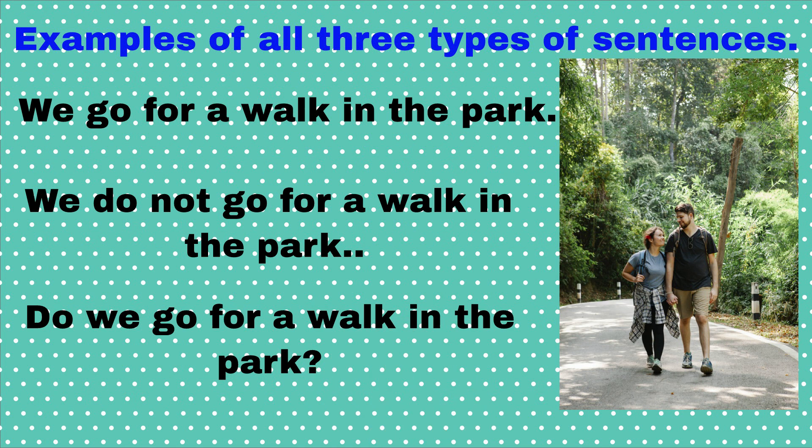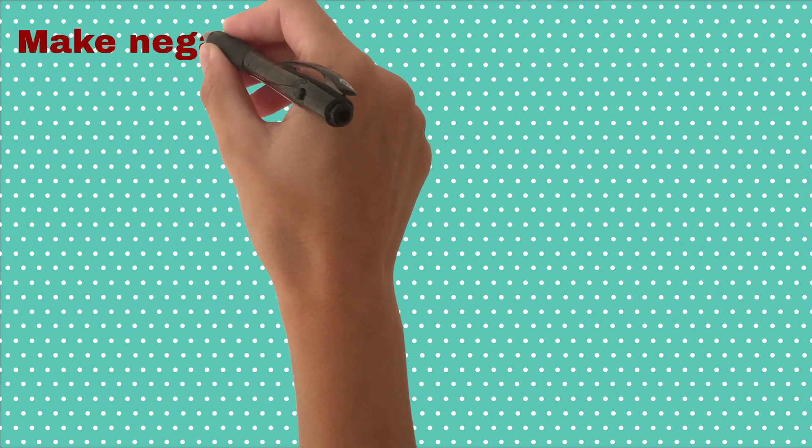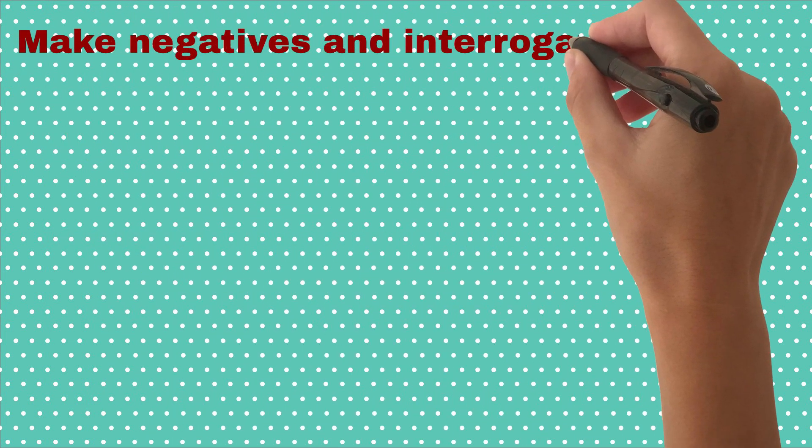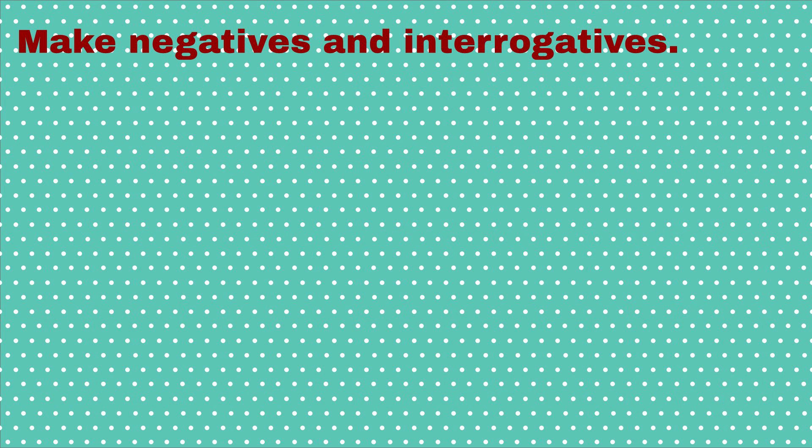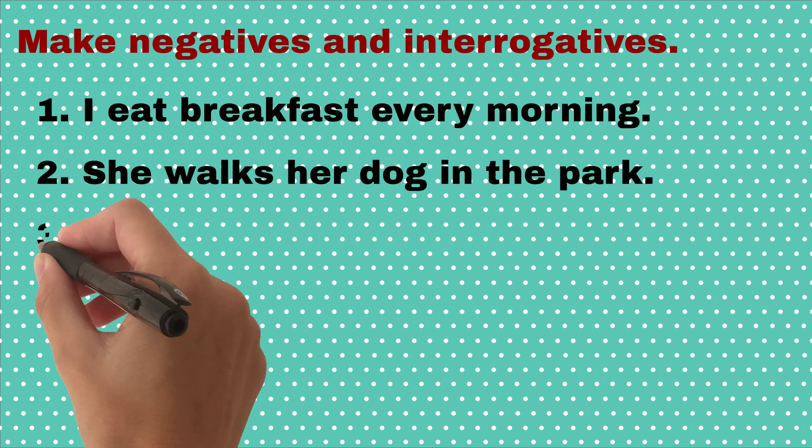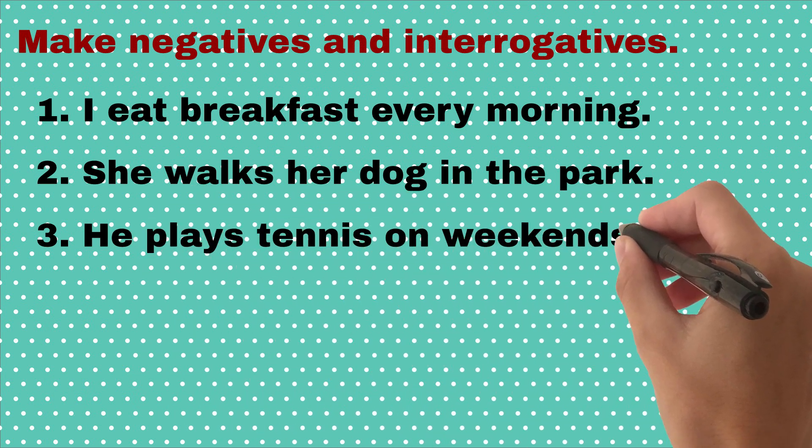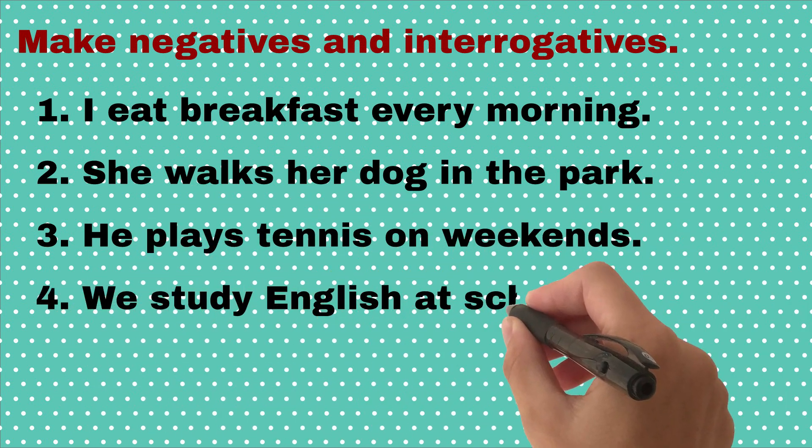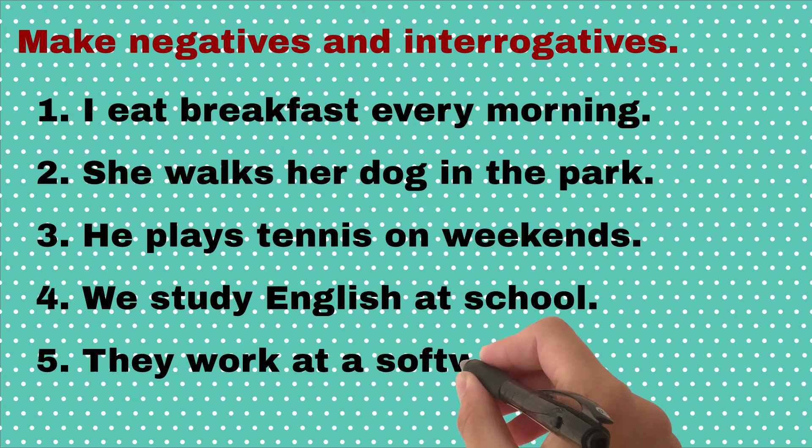Now, let's do some activity. Make negatives and interrogatives of given sentences: I eat breakfast every morning. She walks her dog in the park. He plays tennis on weekends. We study English at school. They work at a software company.